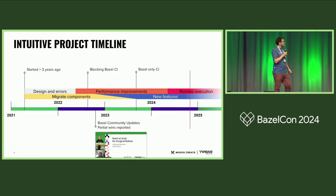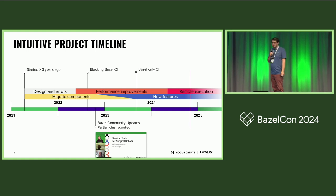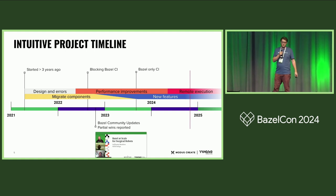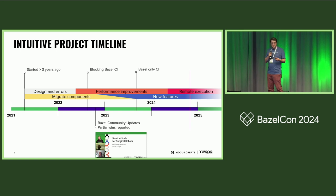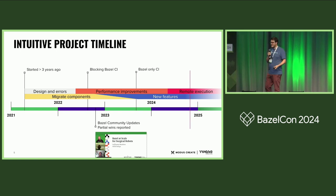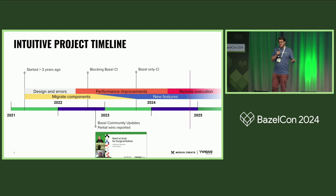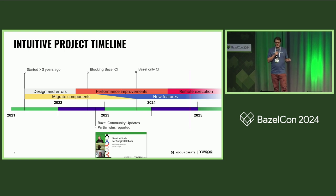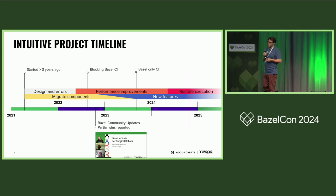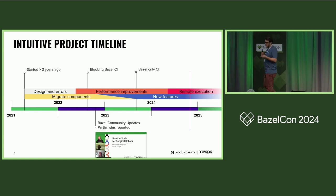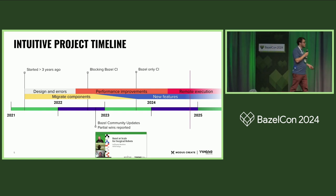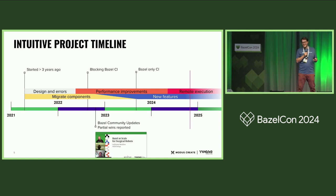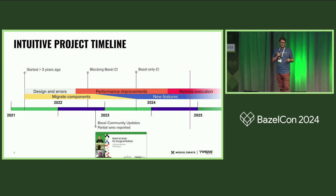Just a few notes about the timeline. It's pretty much a classical migration from CMake to Bazel. It started three years ago, with some iterations trying to design how it would work. Then suddenly this was part of the main CI, and developers were not allowed to break what we had done already — a major milestone. Then we made some performance improvements so it wasn't blocking. When it was deemed good enough, it became the main CI. That's where you know you've mostly finished the migration.